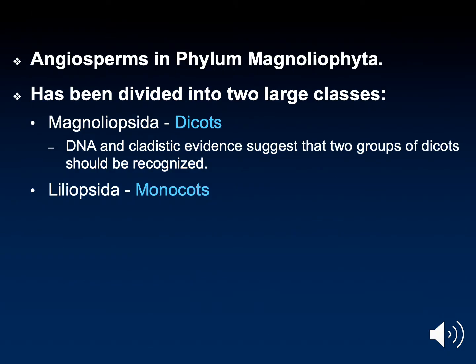Angiosperms are incredibly diverse. However, all angiosperms fall in the phylum Magnoliophyta. In that phylum there are two classes, which essentially are the dicots and the monocots. All of these plants feature flowers.